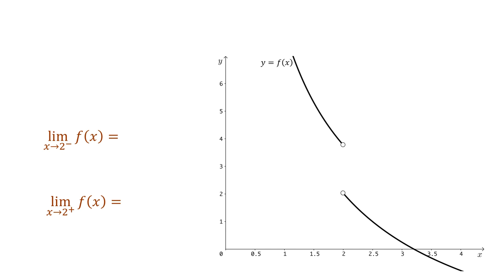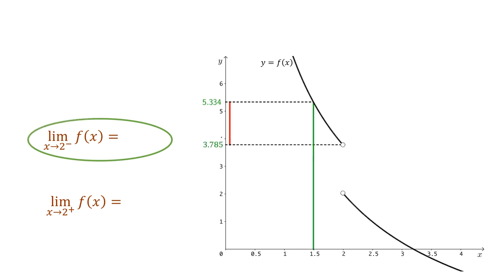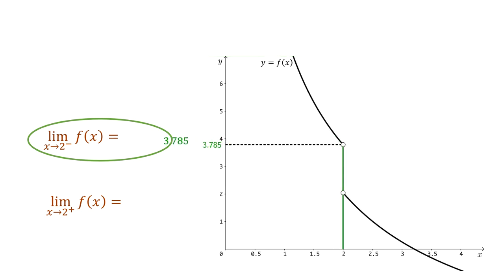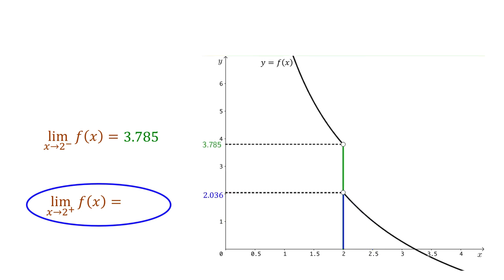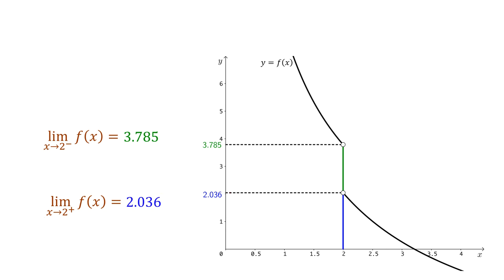Let's zoom back out and think about the heights of these holes. First, let's look at the limit as x approaches 2 from the left. We saw that we could make our approximations as close to 3.785 as we desired, so to three decimal places, 3.785 was the value of the limit from the left. Now for the limit from the right, we saw that we could make our approximations as close to 2.036 as we desired, so the value of this limit to three decimal places is 2.036. What if we think about the limit of f as x approaches 2? We can see that the two one-sided limits have different values. Thus, there is no single number that we can use to approximate the height of both of these holes as accurately as we desire, so we say that the overall limit does not exist.